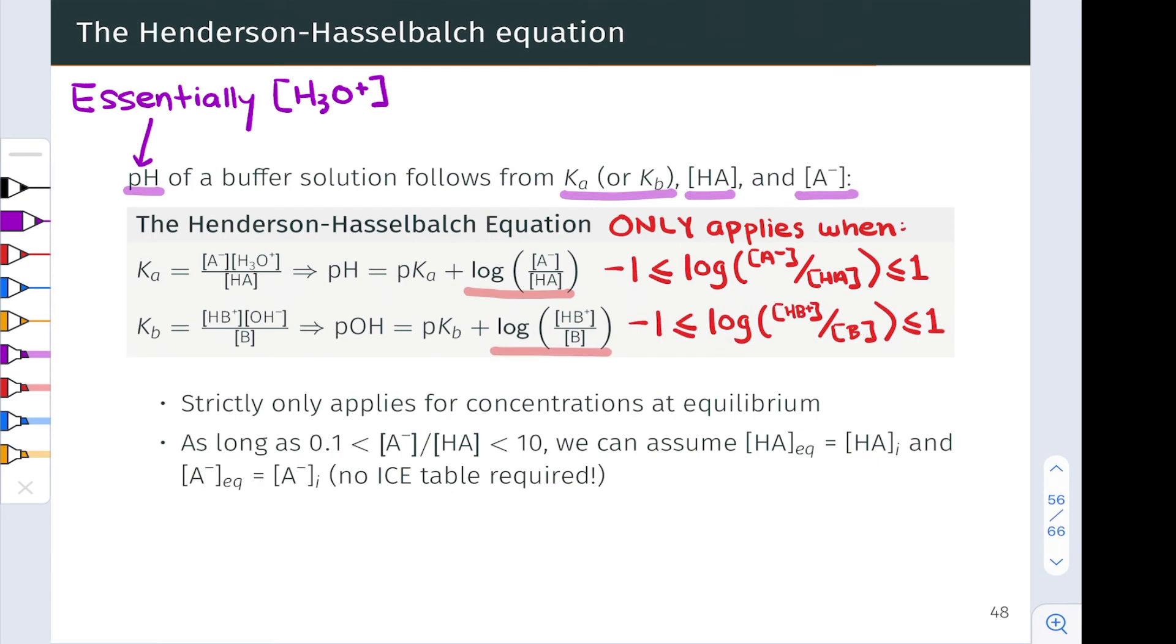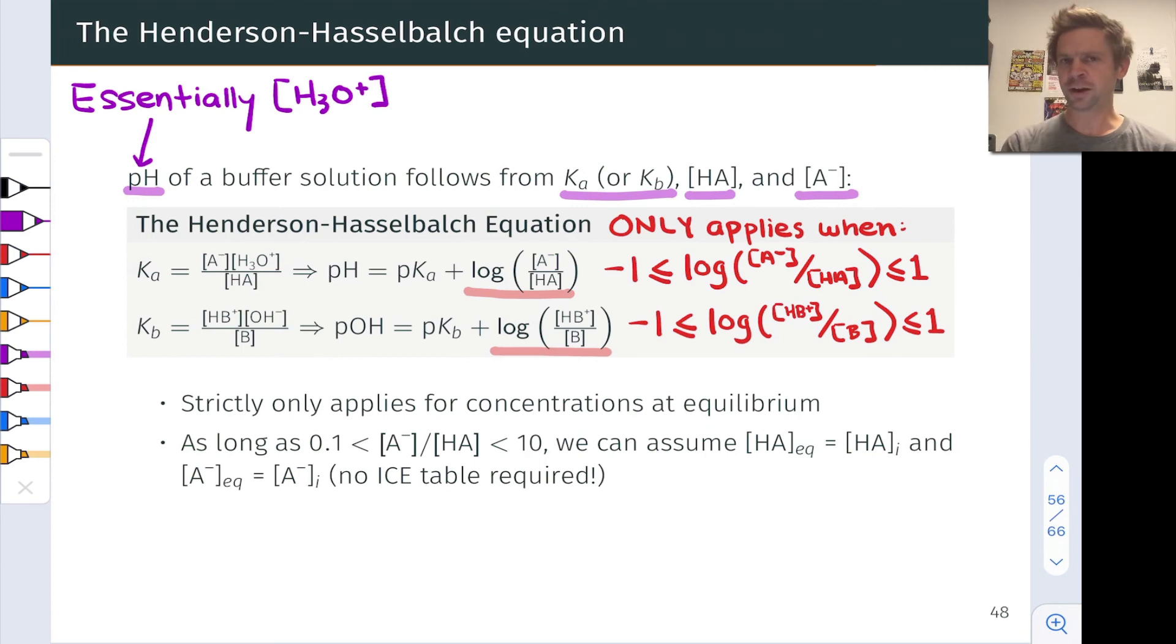And for a buffer based on a weak base, the logarithm of the ratio of HB+ to B must be between negative 1 and 1. Now the Henderson-Hasselbalch equation, as we saw, strictly applies only for concentrations of the weak acid and conjugate base at equilibrium. But as long as we're sure our solution is a buffer and the X is small approximation applies,